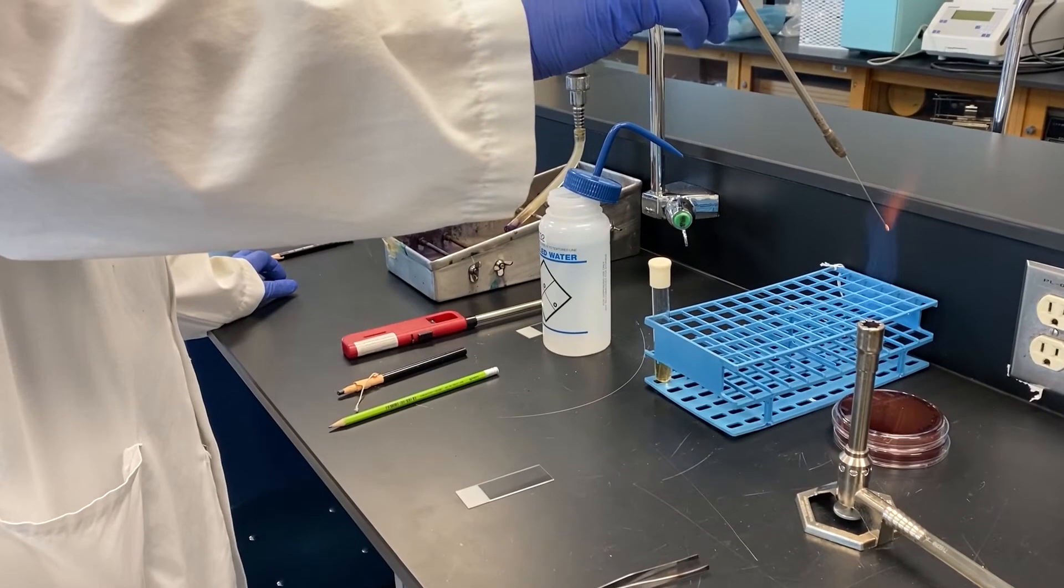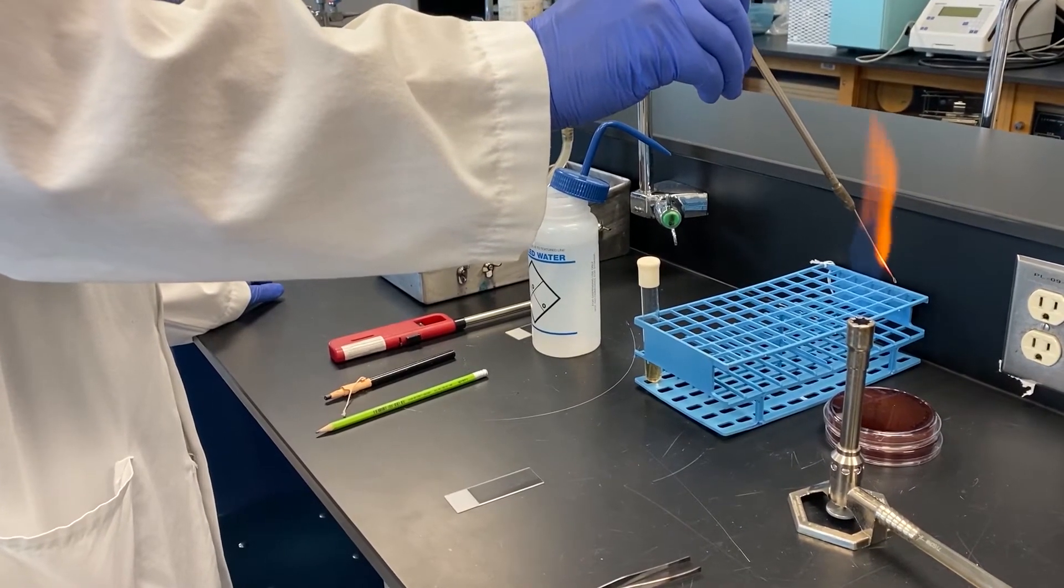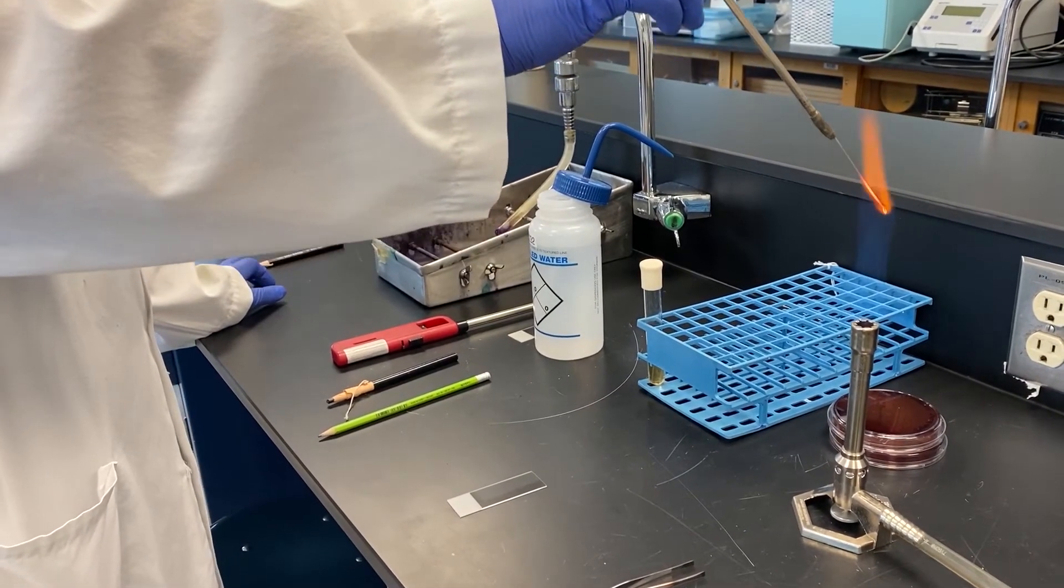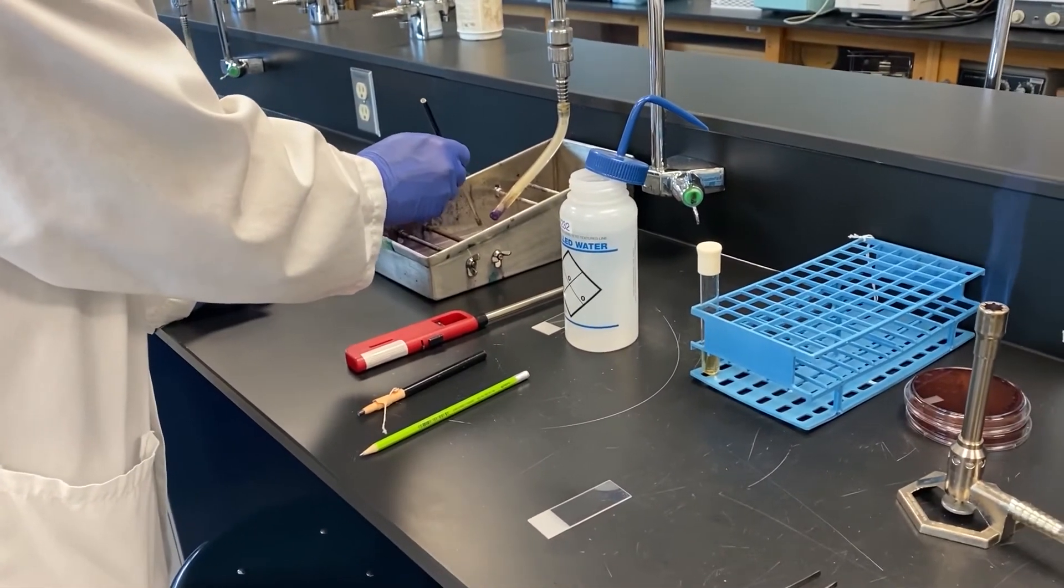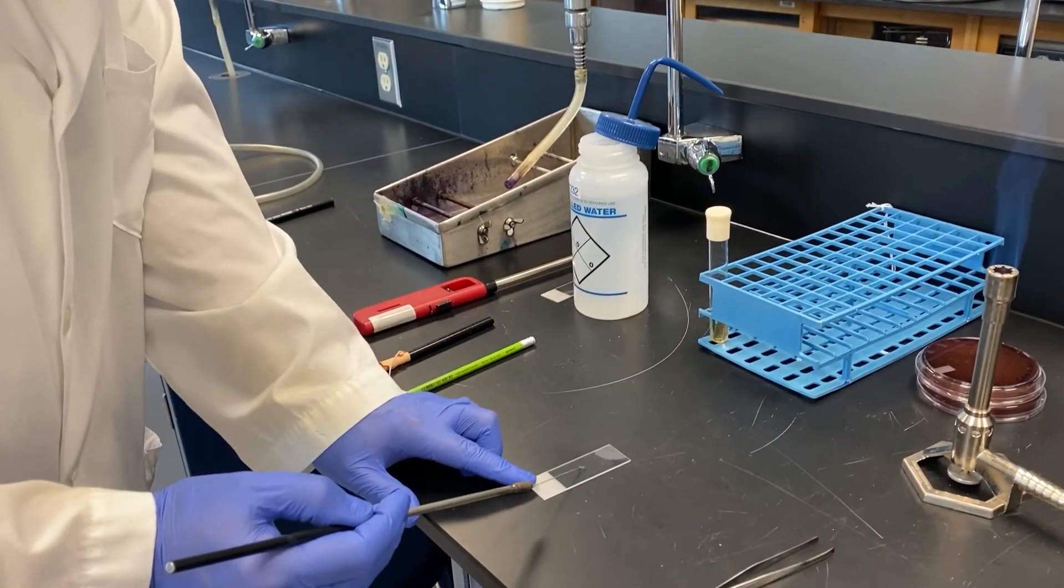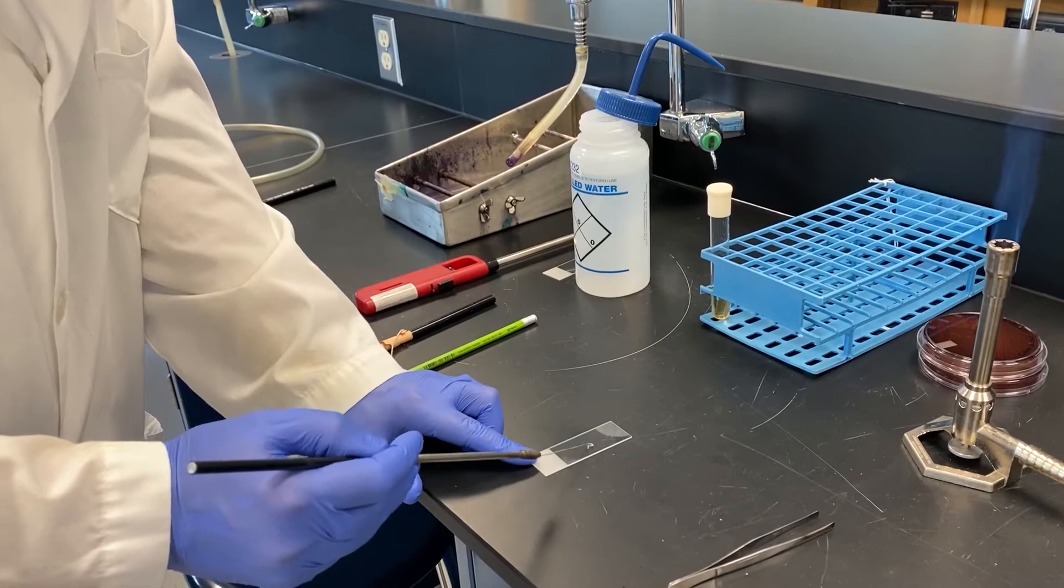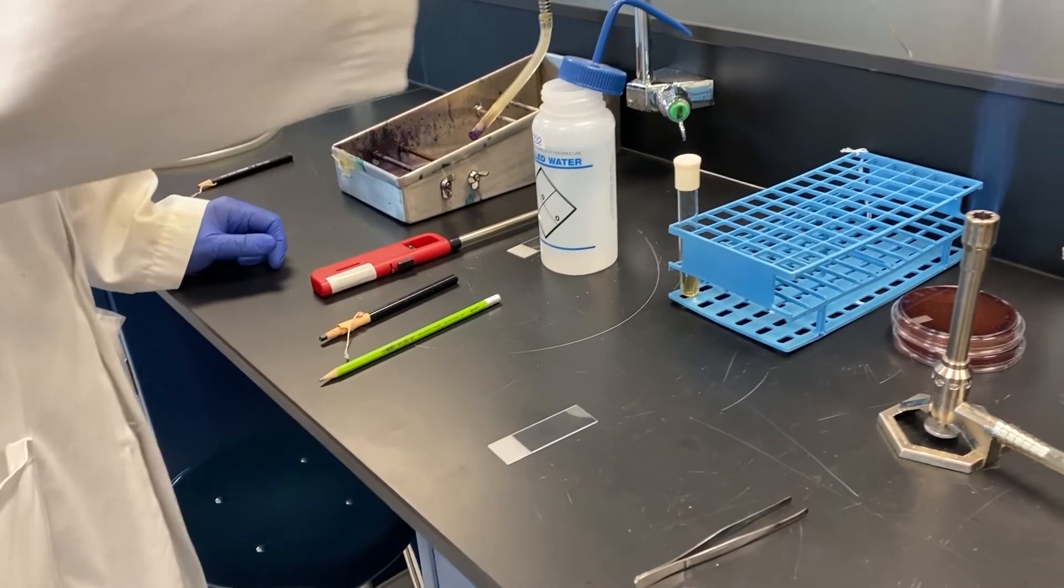First I want to show you how to prepare a slide using bacteria that have been grown on a plate. When making this type of smear you need to add a drop of water to your slide. You can do that using your loop and the flow of water from a tap as is shown here, or you can use water from a water bottle. Notice the sterilization of the loop before and after every use.